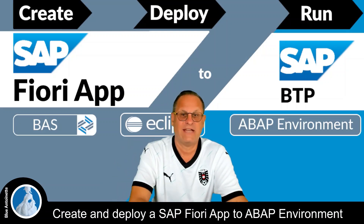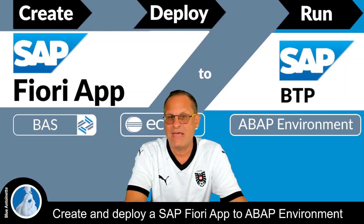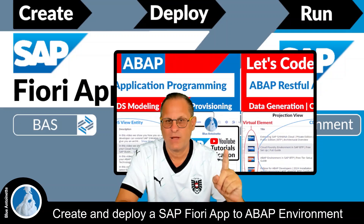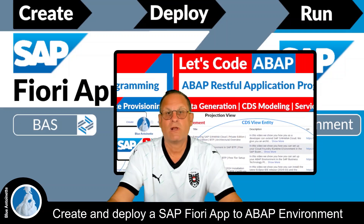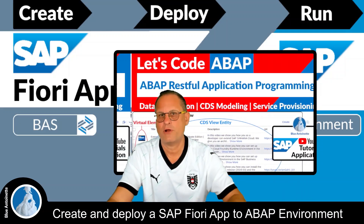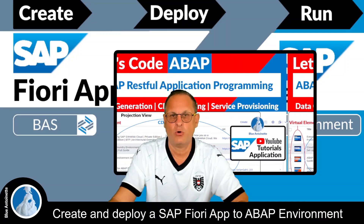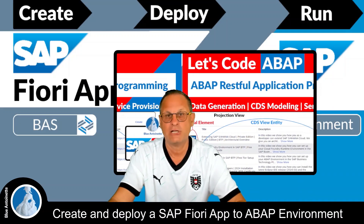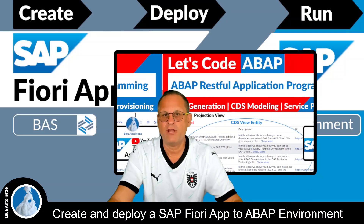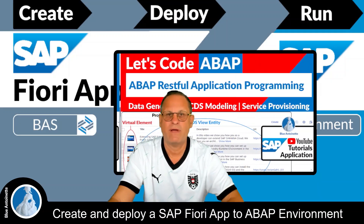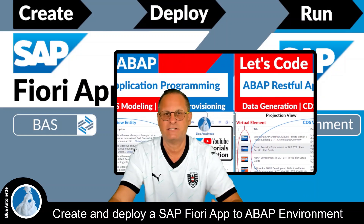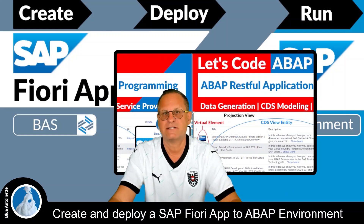In this video, we will create an SAP Fiori app based on an OData 4 service that we created in the previous video using the RESTful application programming model. We will customize this YouTube tutorials app to automatically load data from the database and display it in the UI once the app is launched. Then we will deploy the app to the ABAP environment in SAP BTP and create an identity access management app and a business catalog for it.